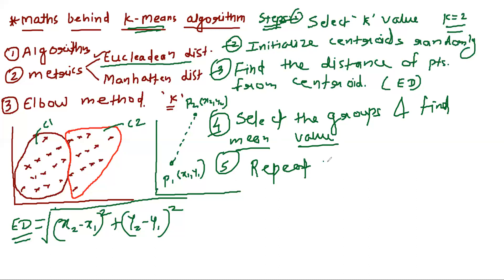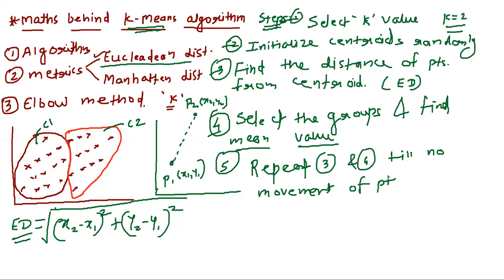The last step says: repeat steps three and four until there is no movement of points observed. No movement of points means points are no longer moving from one cluster to another cluster. I will explain all these steps one by one with the help of a simple example.